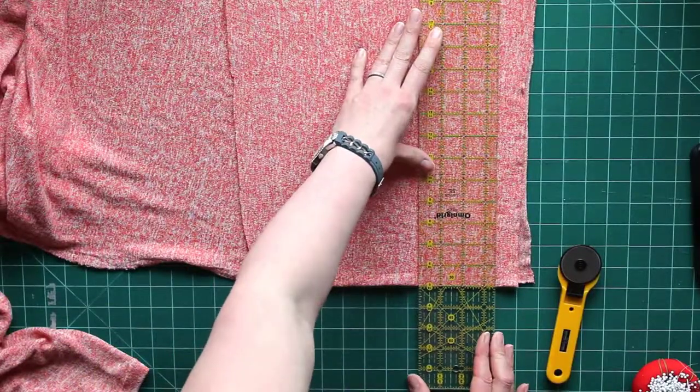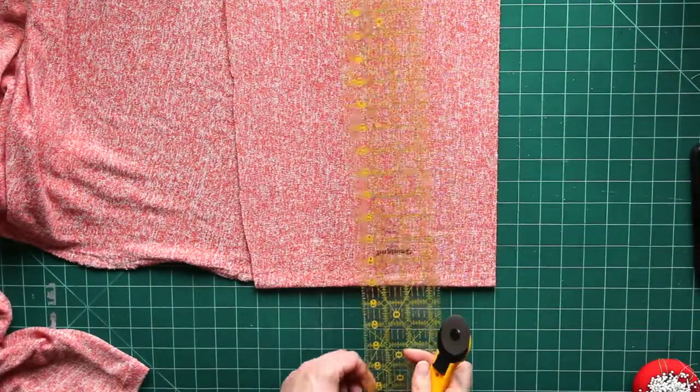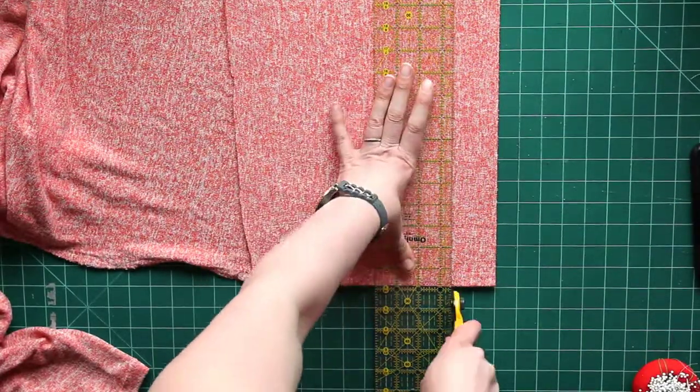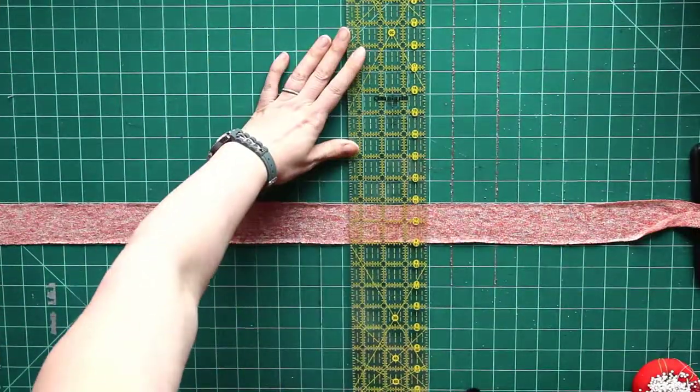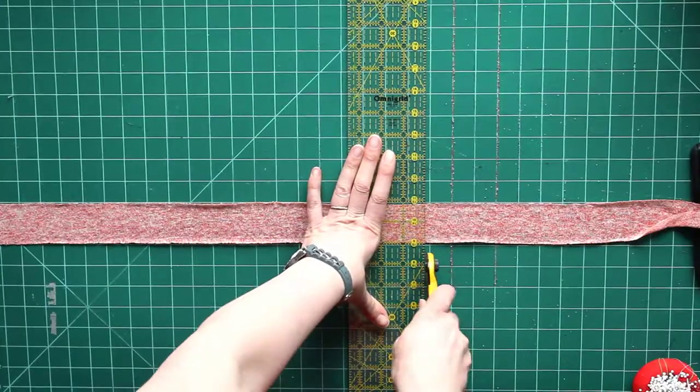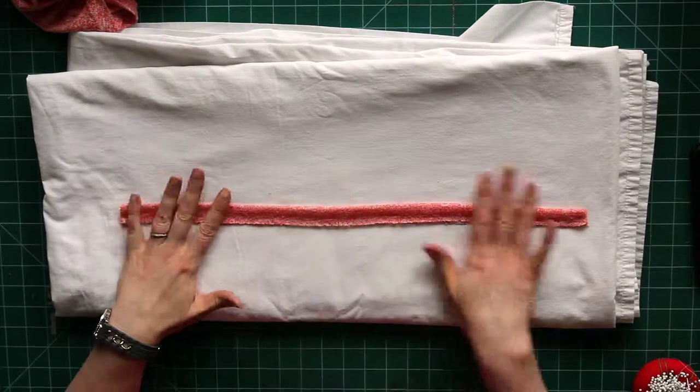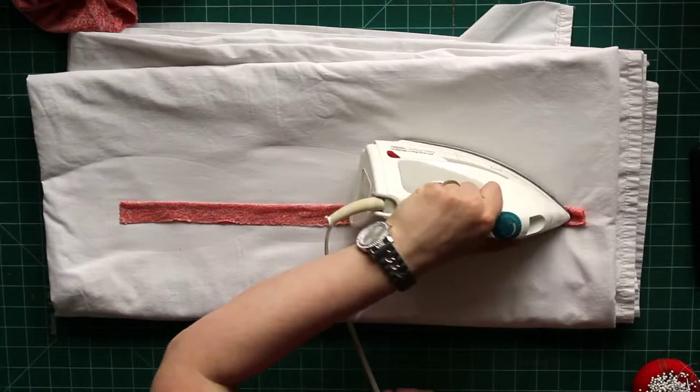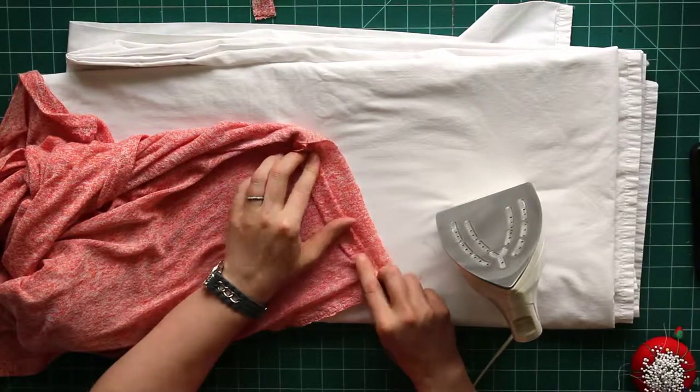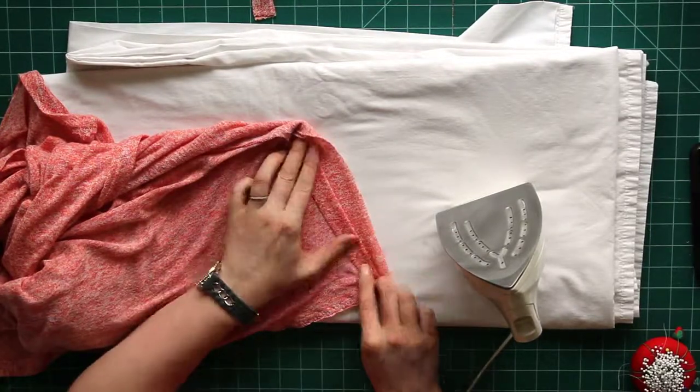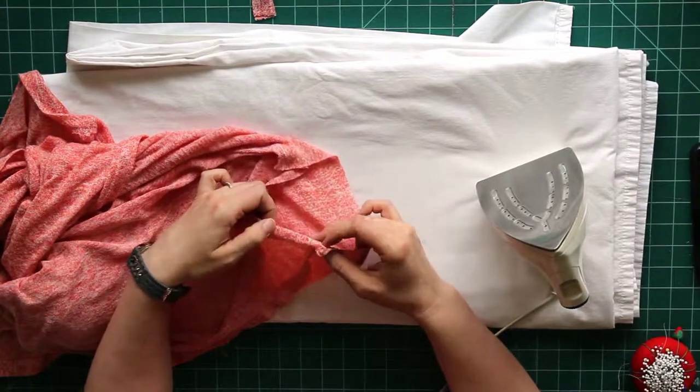Now I need a strip of fabric for my neckline so I'm just squaring up my fabric right there and I'm going to cut a two inch strip for the neck trim and I believe this one for the size that I was working on needed to be 27 and three quarters of an inch long and that measurement is given to you in the instructions. Then I just press that in half. I'm also pressing the sleeves at this time just because I had my iron out I might as well get it all done at once.